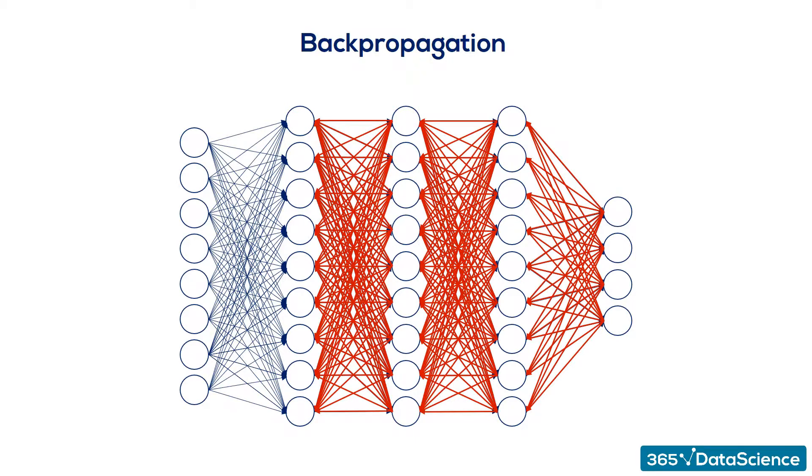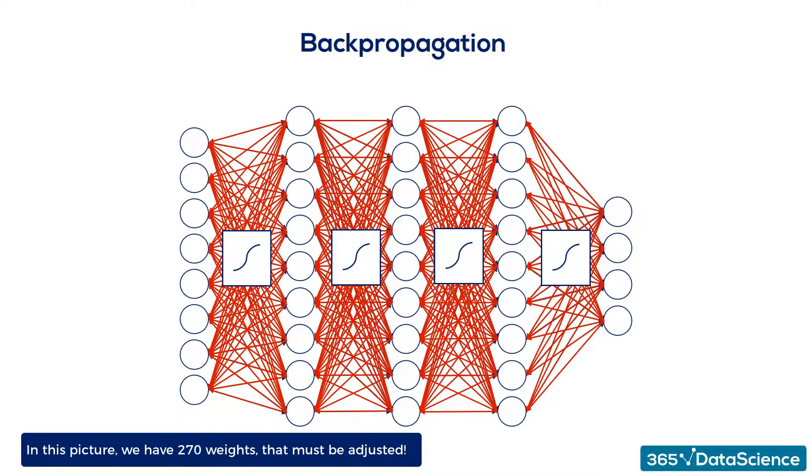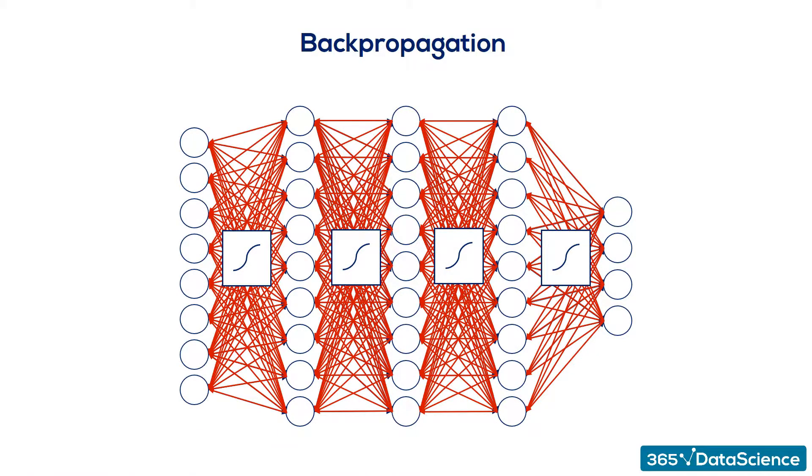For example, in this famous picture, we have 270 weights. And yes, this means we had to manually draw all 270 arrows you see here. So, updating all 270 weights is a big deal. But wait! We also introduced activation functions. This means we have to update the weights accordingly, considering the used nonlinearities and their derivatives.